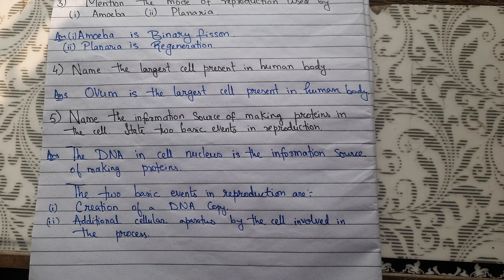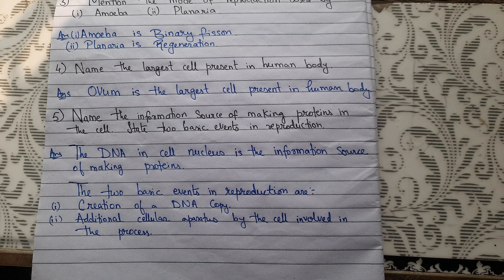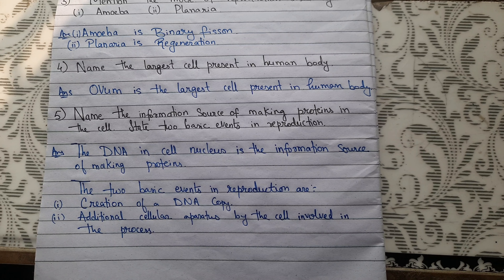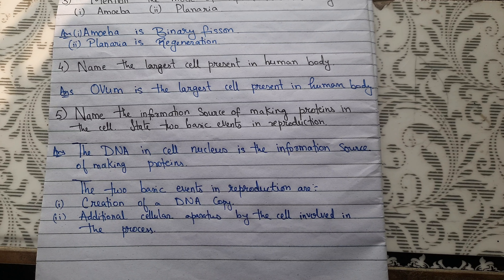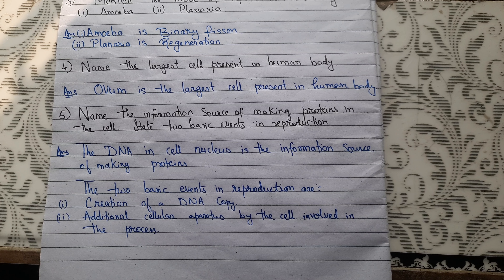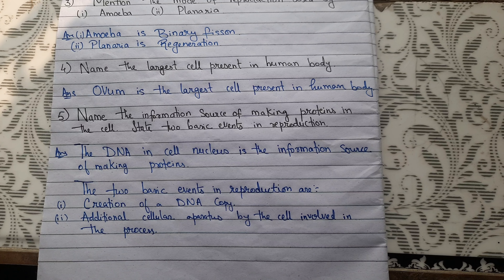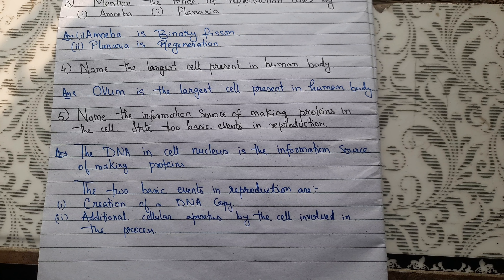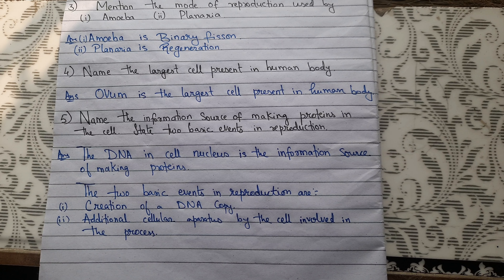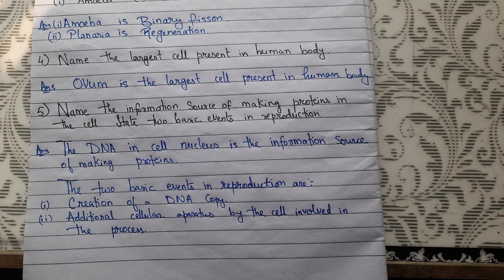The fifth question is: name the information source of making proteins in cells, and state two basic events in reproduction. The DNA in the cell nucleus is the information source of making proteins. The two basic events in reproduction are: creation of a DNA copy, and additional cellular apparatus by the cell involved in the process.